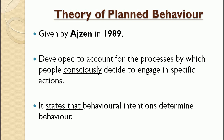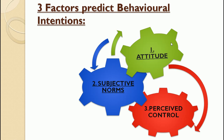Now we are going to study the three factors that predict behavioral intention. We have seen that it is behavioral intentions which determine behavior. So who determines the behavioral intentions? There are three factors that actually predict our behavioral intention — that means three factors which predict whether we will do something or not. The first factor is attitude, the second factor is subjective norms, and the third one is perceived control.